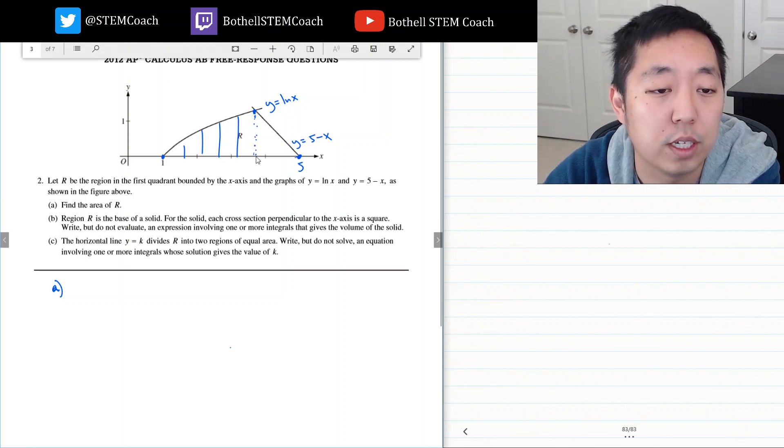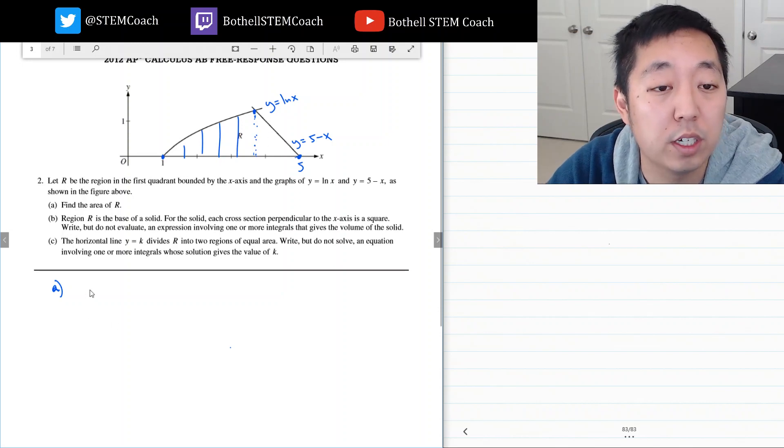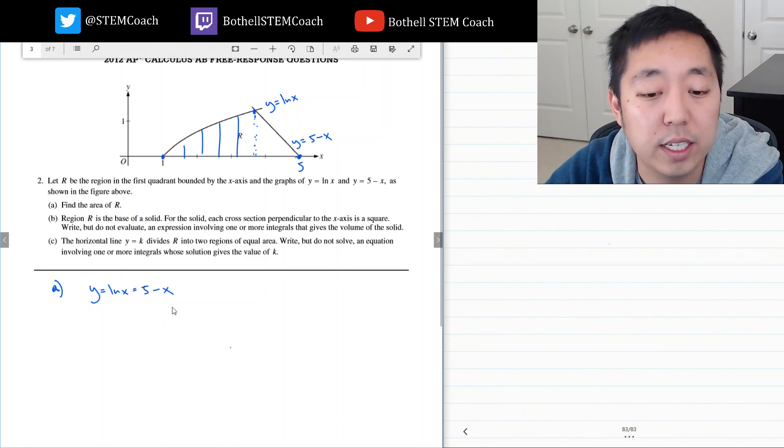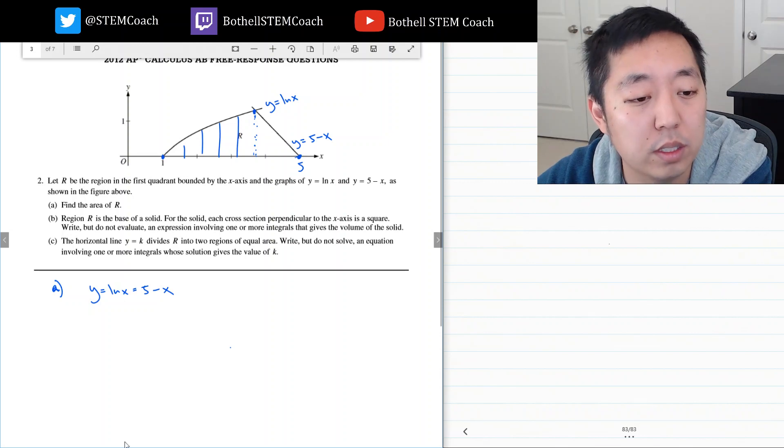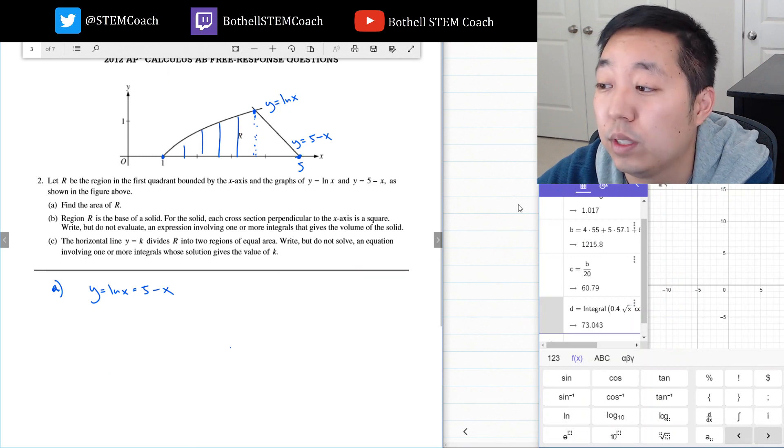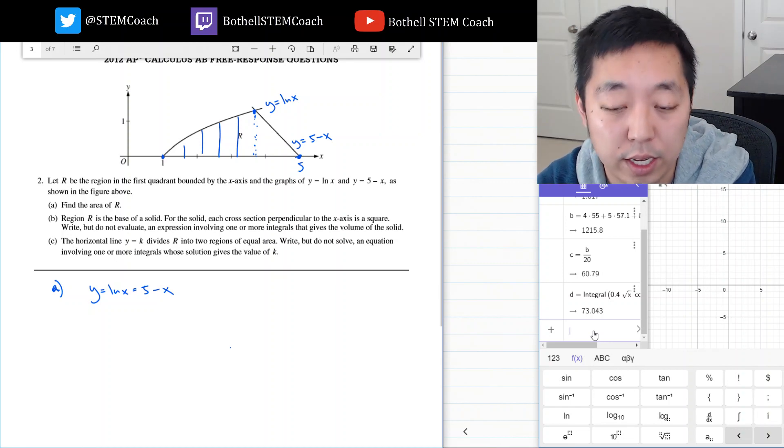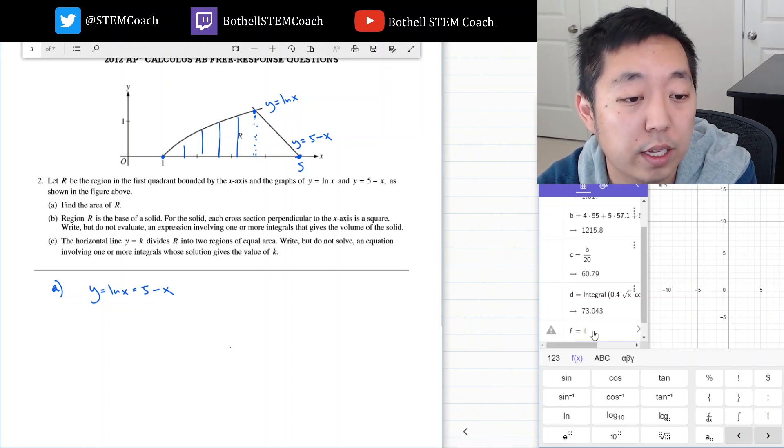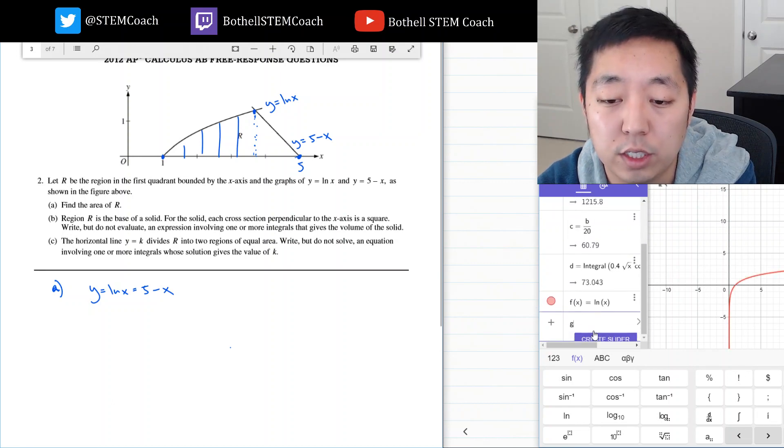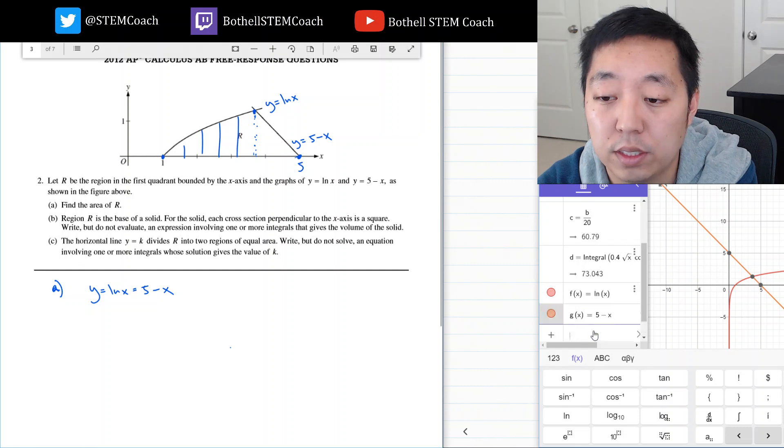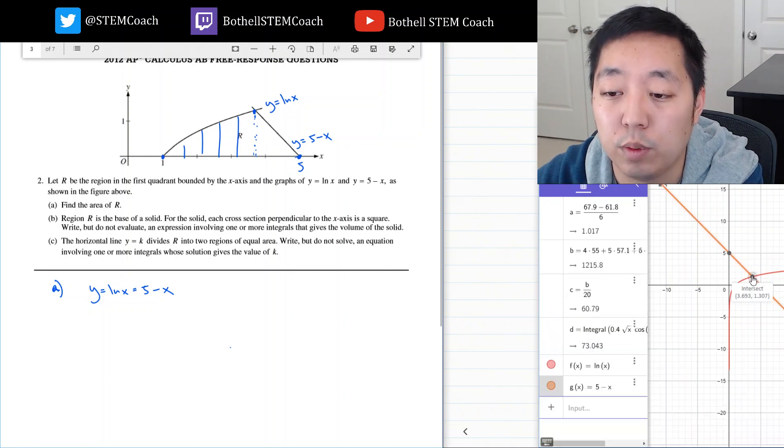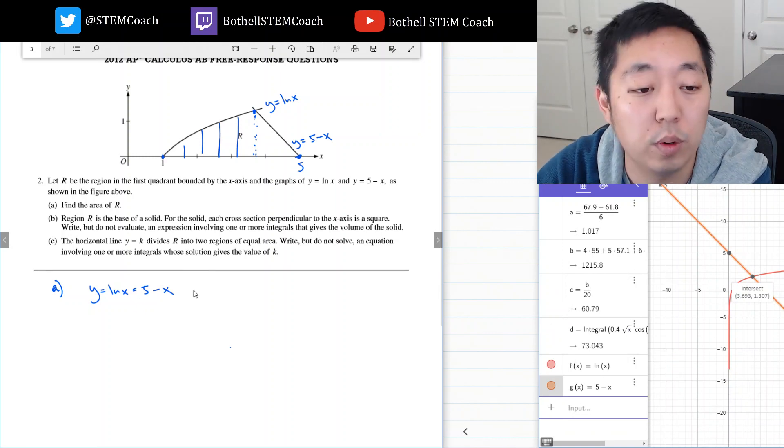So I need to find this intersection point so I can set up my integrals. This occurs when y equals ln x equals 5 minus x. There's not an easy analytical way to solve it, so we'll have to solve that numerically. I'm going to pull out my calculator and plot this. f equals ln x and then g equals 5 minus x. Here we can find the intersection point. The intersection is at x equals 3.693.